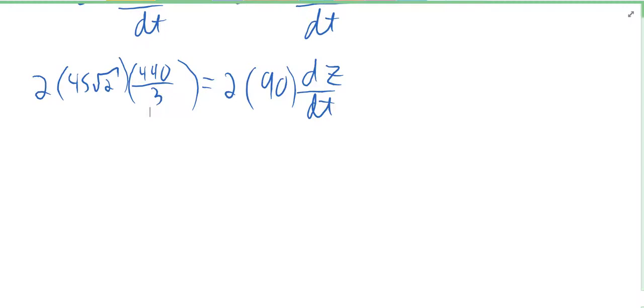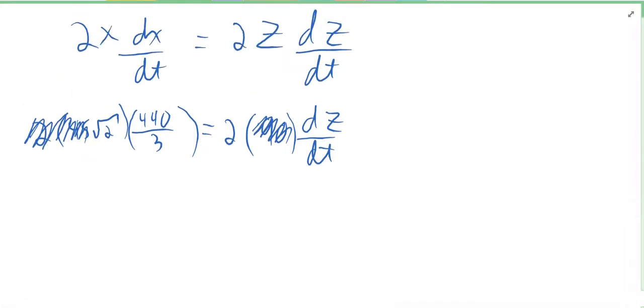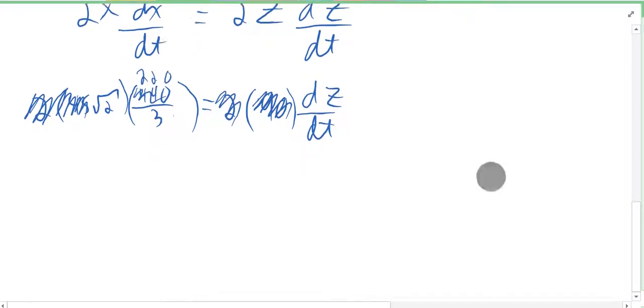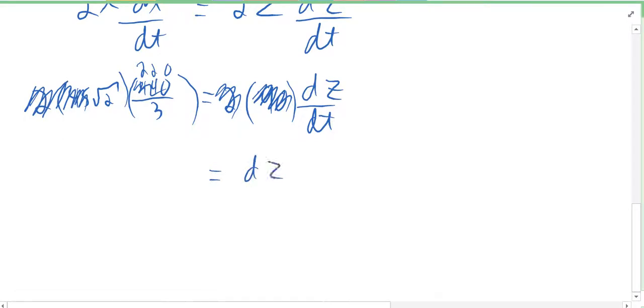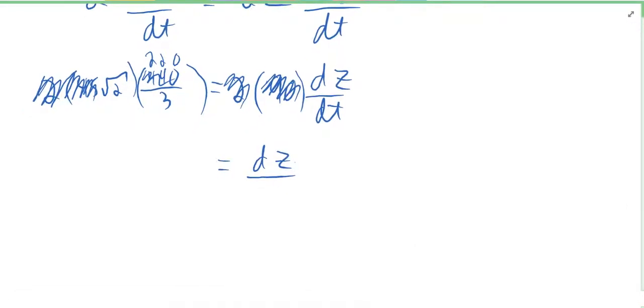We got to solve for dz/dt. Before we do this, let's cancel some things out. Check this out: you can divide 90 from both sides, that's going to cancel the 2 and the 45. We can divide 2 on both sides, that's going to make the 440 a 220. The only thing left - move dz/dt on this side to the right hand side, and then the left hand side is 220 root 2 over 3, and that is in feet per second.